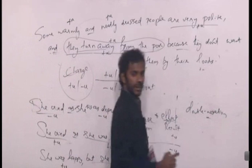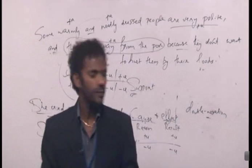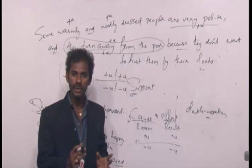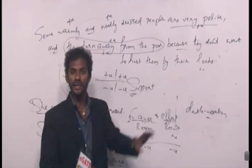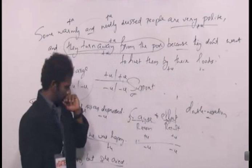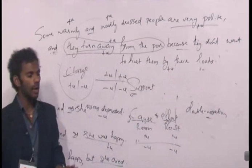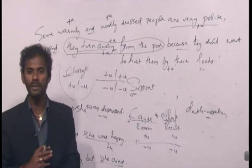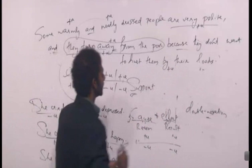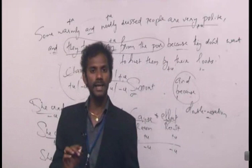I told you about double negation yesterday. When two negative terms come together, the meaning becomes positive. 'Don't' is negative and 'hurt' is also negative. So 'they don't want to hurt them by their looks' — the reason is positive. If the reason is positive, the result must also be positive. So in this context, 'they turn away from the poor' is positive. We could identify the charge of this idea only with the help of the indicators 'and' and 'because.' That's why: don't miss any indicator while reading.